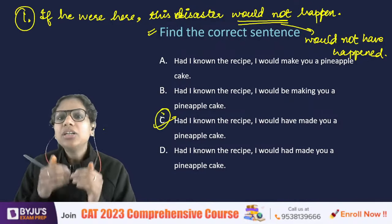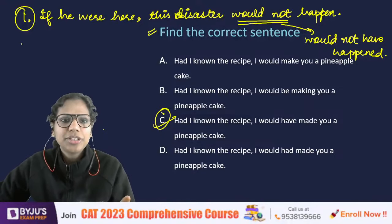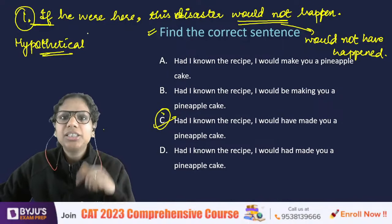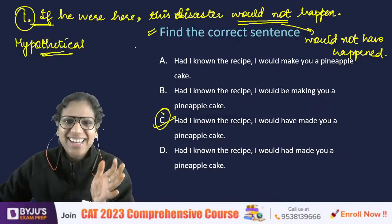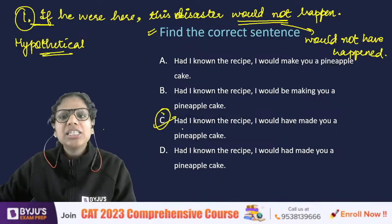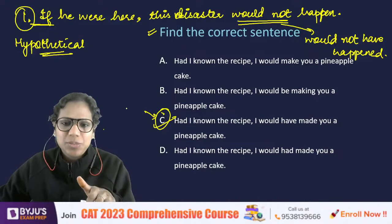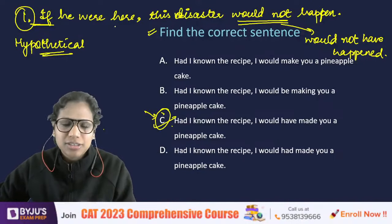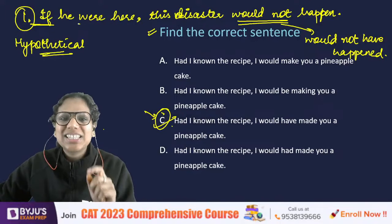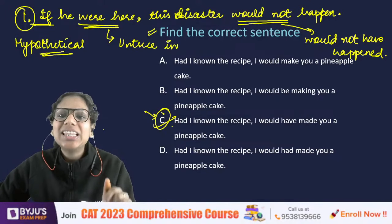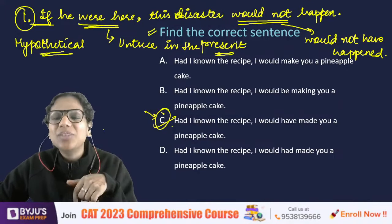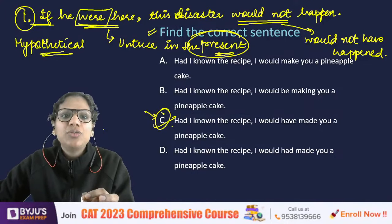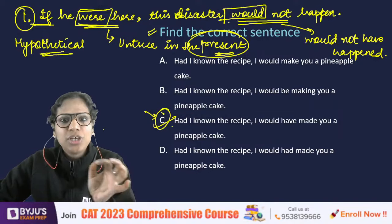When something is untrue in the present — this person is not here right now — you use the were/would structure: 'If he were here, this would not happen.' Currently he is absent, so this is a hypothetical present scenario. The answer to the error spotting question is C.